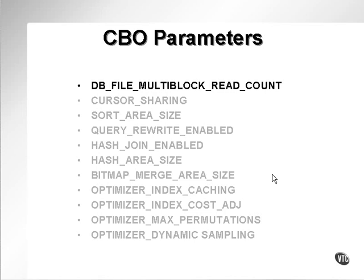What does DB File Multi-Block Read Count do? The default is generally set to something like 4, 8, or 16. Whenever the database reads something using a SQL statement, if DB File Multi-Block Read Count is set to 8, then every read will read 8 blocks from disk. If it's set to 1, every read will read a single block. If it's set to 16 or 32, then every read will read 16 or 32 consecutive blocks at the same time.